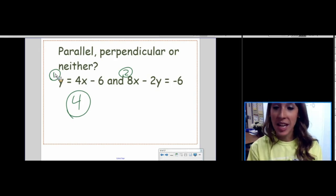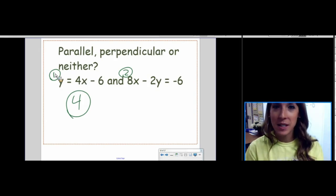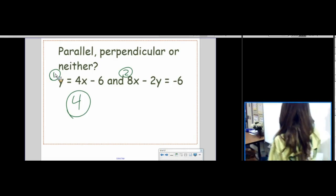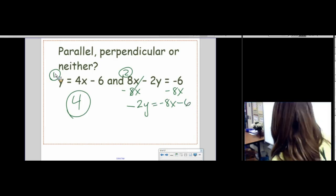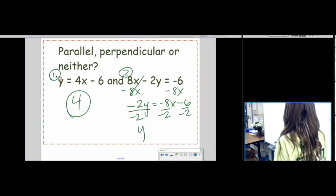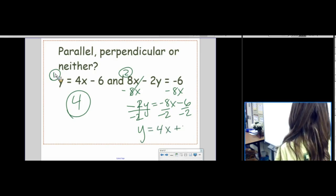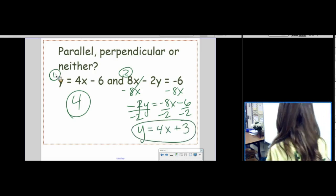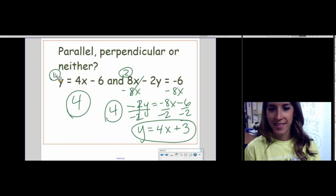X never belongs in a slope. A slope is not a variable. Okay, so the slope of this one is 4. What's the slope of number 2? Be careful. That one's not as easy. Don't say 8. You have to, the equation has to be in Y equals MX plus B form to find the slope. So, we are going to subtract 8X from both sides. Negative 2Y equals negative 8X minus 6. That's a lot of negatives. So, divide by negative 2. That cancels. Y equals 4X plus 3. So, the slope is 4. So, what's our answer? Parallel, perpendicular, or neither? Parallel. The answer is parallel. Good.